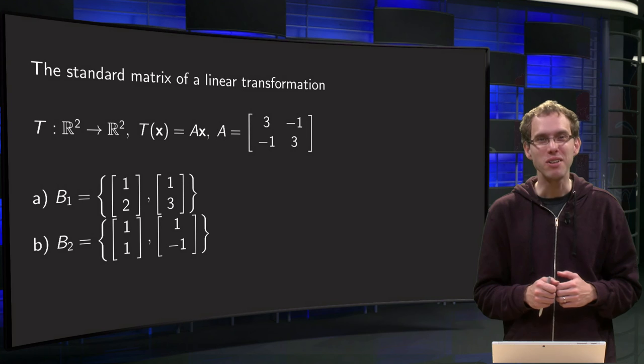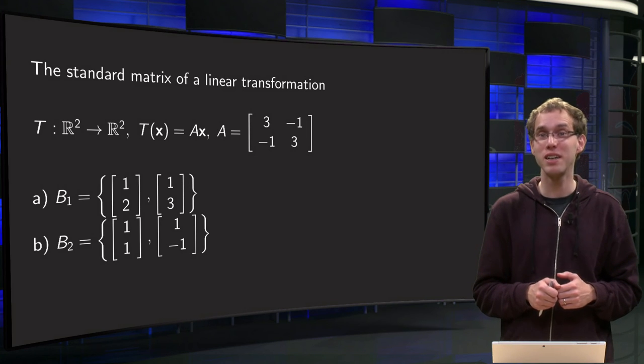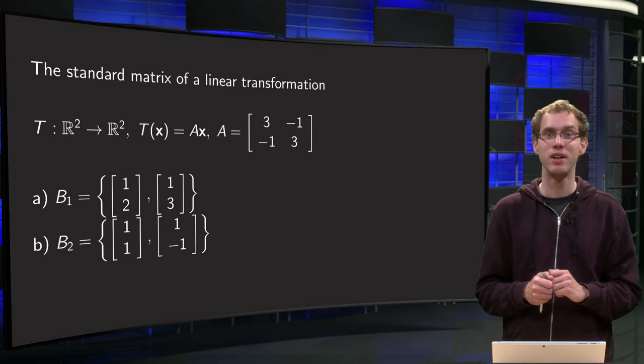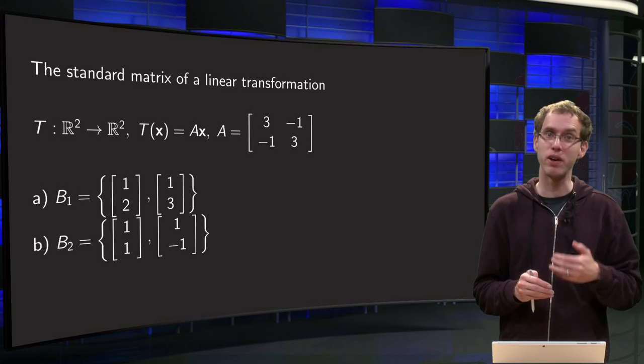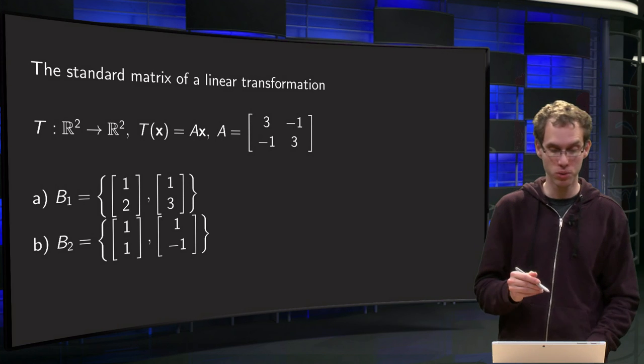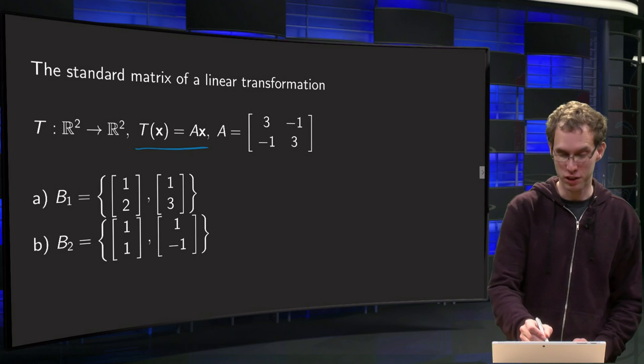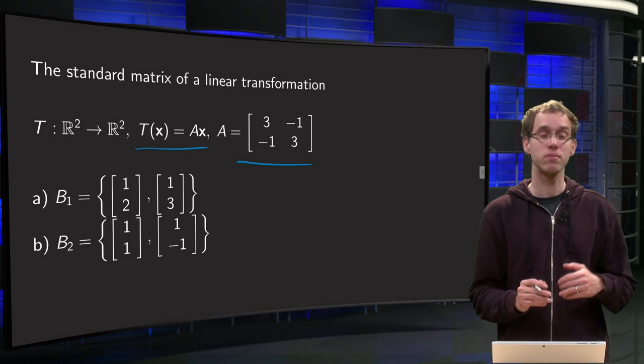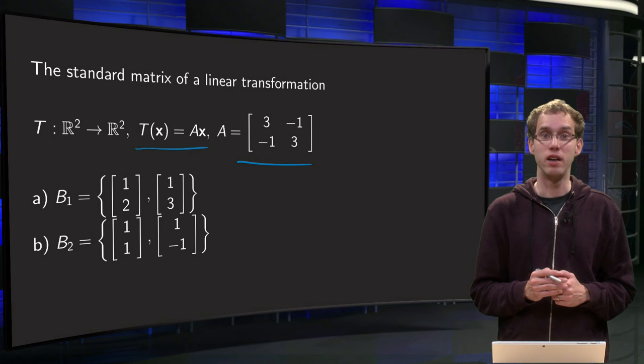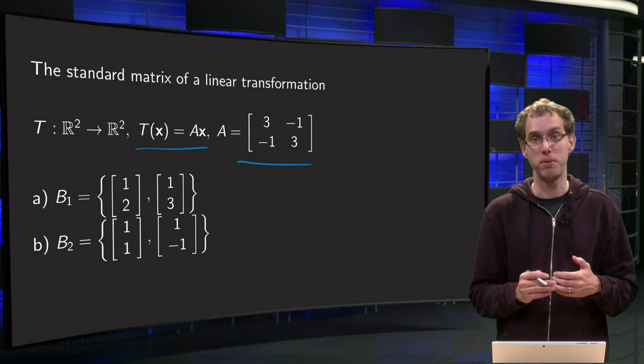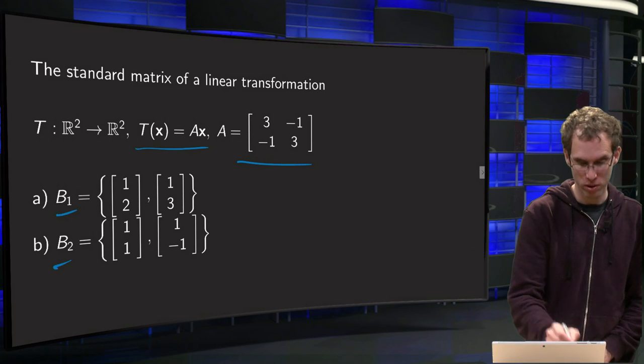Well, it turns out that another basis may be a better choice for some linear transformations, as you will learn in this video. We will do an example. If we have a transformation T from R² to R², T(x) equals A times x, and A is this matrix over here. And now we wonder what happens if we compute the matrix M of this transformation with respect to other bases like B1 or B2.